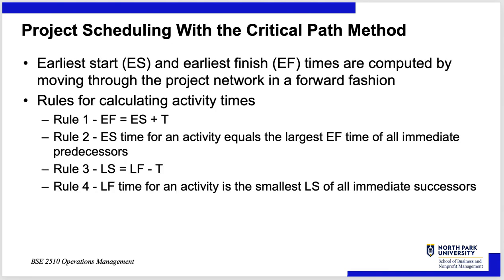Project scheduling with the Critical Path Method: every task has an earliest start (ES) and earliest finish (EF) time, computed by moving through the network in a forward pass. Rules: early finish = early start + duration. The early start time for an activity equals the largest early finish time among all its immediate predecessors. Then there's a late start (LS) = late finish (LF) minus duration, looking at it from the opposite end. The late finish time for an activity is the smallest late start of all its immediate successors.